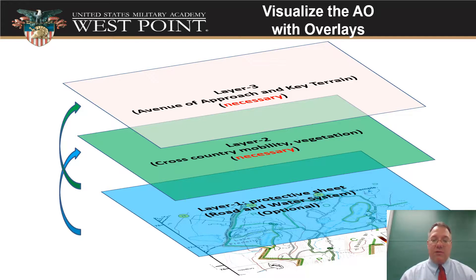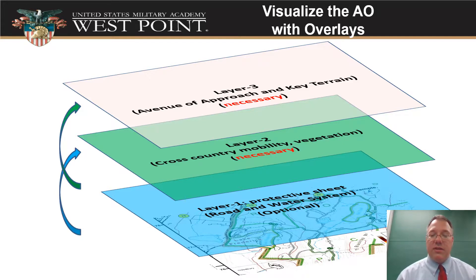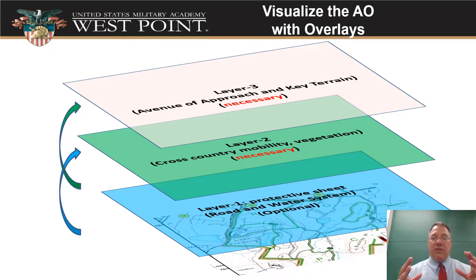We've got our map at the bottom. An optional thing is whether or not you want to lay out every road and every water system, every little stream on there. You can make an overlay that shows those things. That helps you because sometimes the map is too much to look at, and seeing the terrain without the rest of the map mucking it up — having those roads and waterways there might help you out.